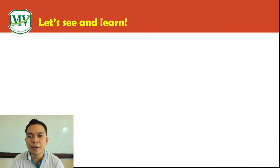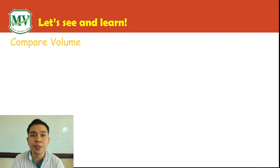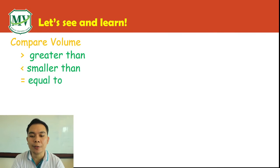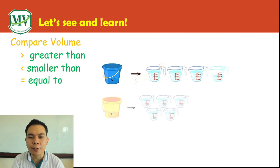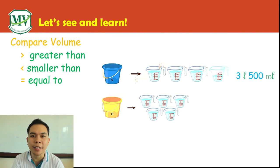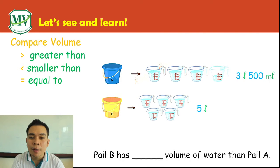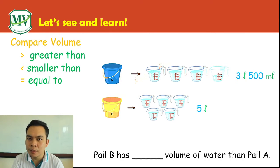Now let's see and learn how to compare volumes using greater than, smaller than, and equal to. These containers contain different volumes of water. Pail A has 3 liters 500 milliliters of water. Pail B has 5 liters of water. So Pail B has blank volume of water than Pail A — is it greater, smaller, or equal to?